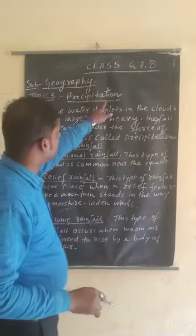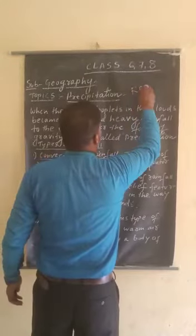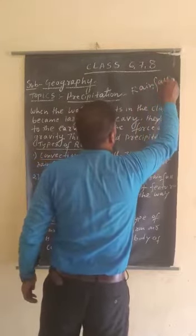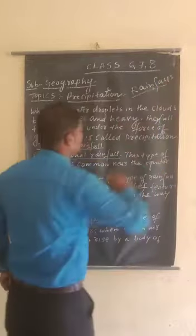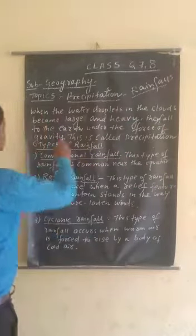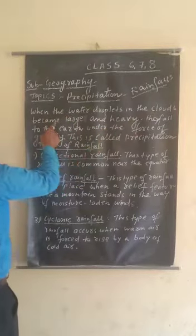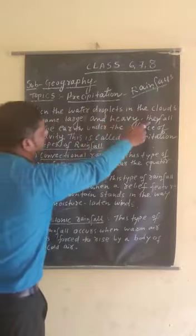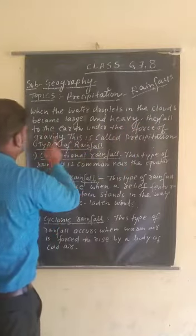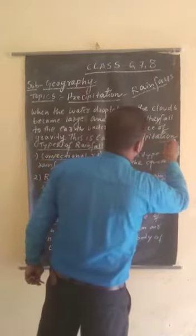Precipitation is totally dependent on rainfall. Today I am discussing how many kinds of rainfalls there are. When the water droplets in the clouds become large and heavy, they fall to the earth under the force of gravity. This is called precipitation — that is the definition of precipitation.